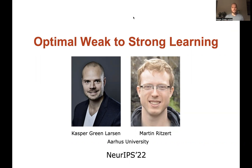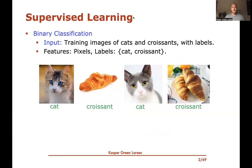Let me set the stage for our results. We're going to look at supervised learning — specifically binary classification, where the goal is to make predictions of labels given some features describing an object. For instance, image recognition where the features are pixels and the labels correspond to what is in the image, such as distinguishing whether a picture shows a cat or a croissant.